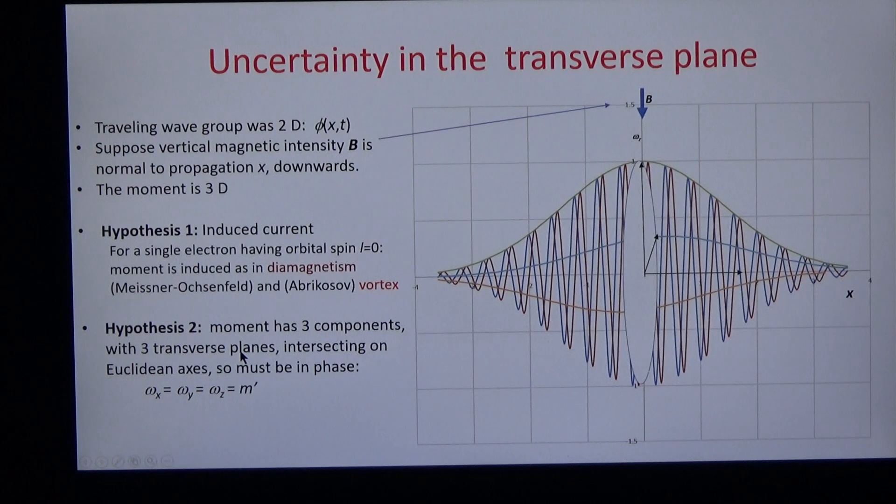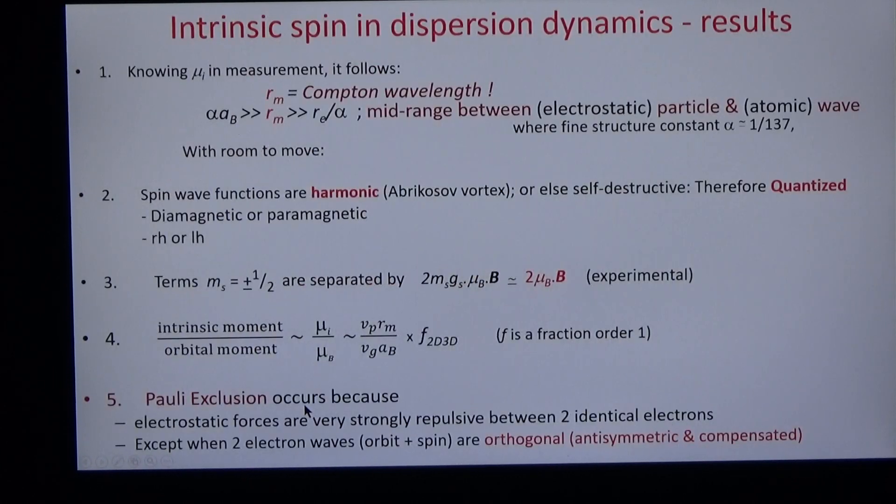We make a second hypothesis. The moment has three components and three transverse planes, and the transverse planes intersect on the Euclidean axis. And so they're in phase and have the angular frequency we plotted before from relativity.